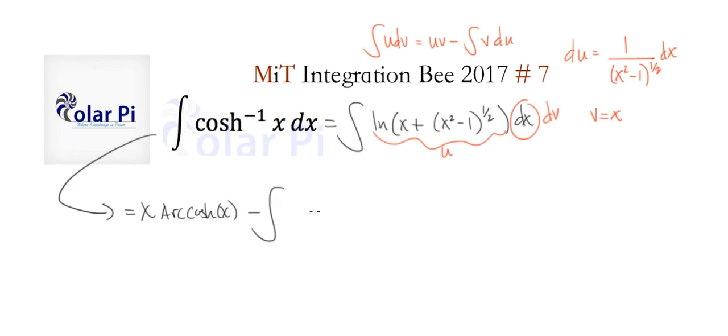And then minus vdu is gonna be minus x divided by the square root of x squared minus one, which we can write like that. Now I'm not gonna work out the details of this integral because it's pretty simple.